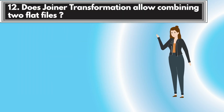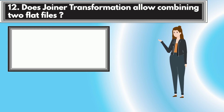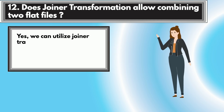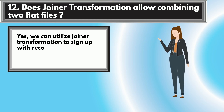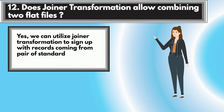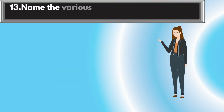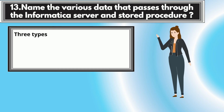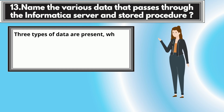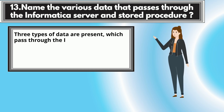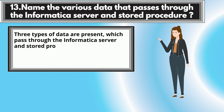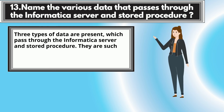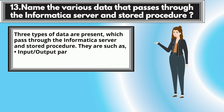Question 12: Does Joiner Transformation allow combining two flat files? Yes, we can utilize Joiner Transformation to join records from two flat file sources. Question 13: Name the various data types that pass through the Informatica server and stored procedure. Three types of data are present: input-output parameters, return values, and status code.